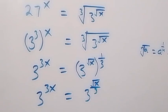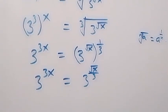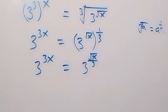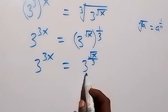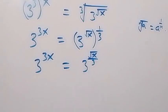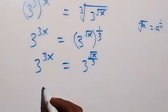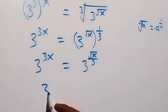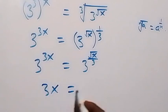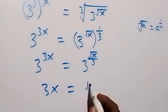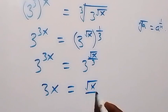Now from there, we have the same base on both sides, so when we equate the powers, this becomes 3x now equals to root x over 3.